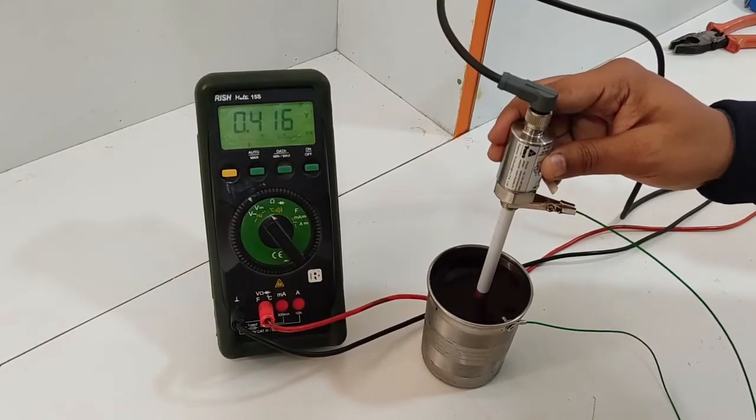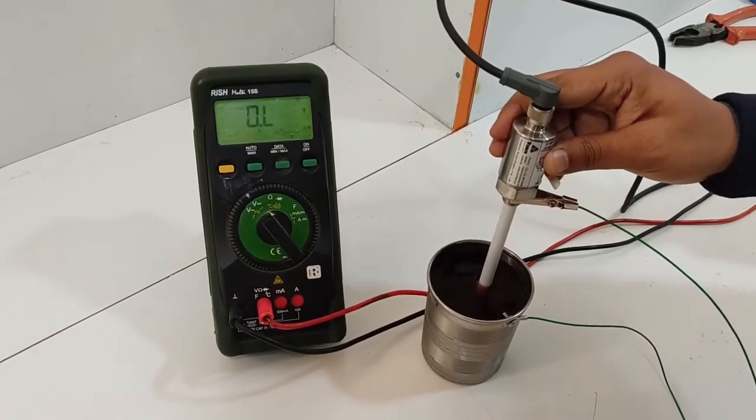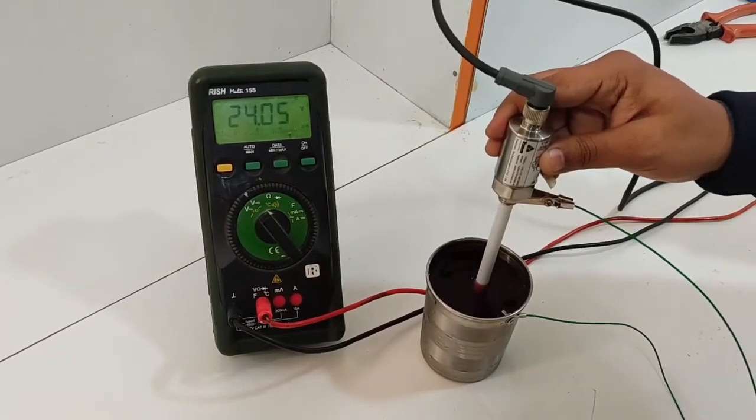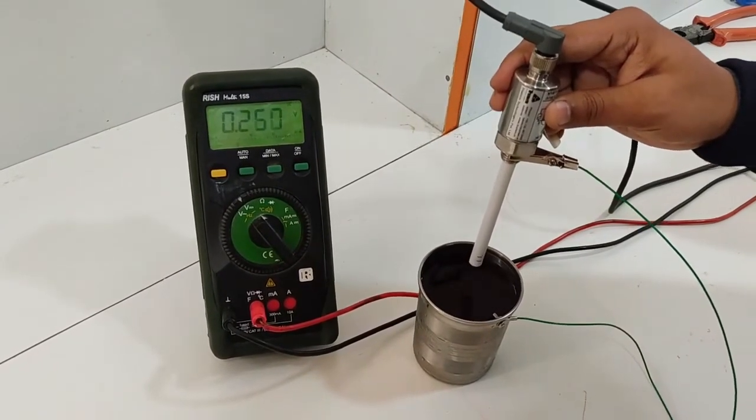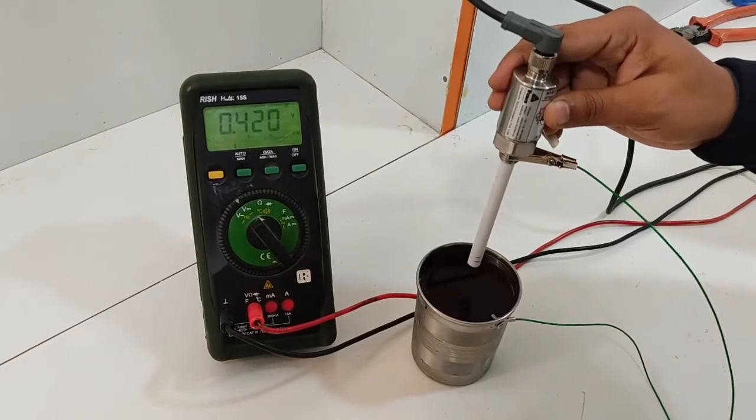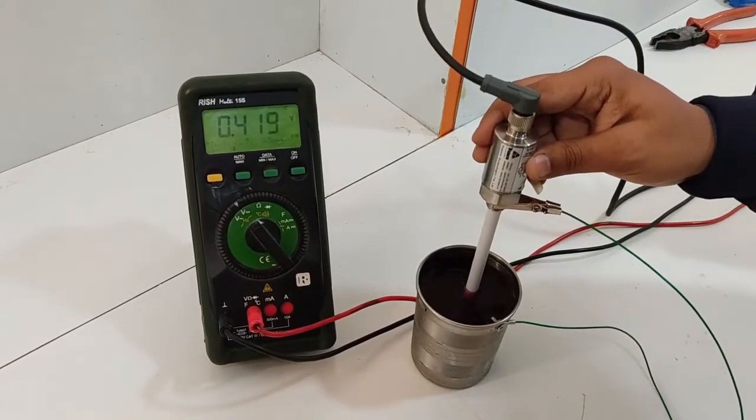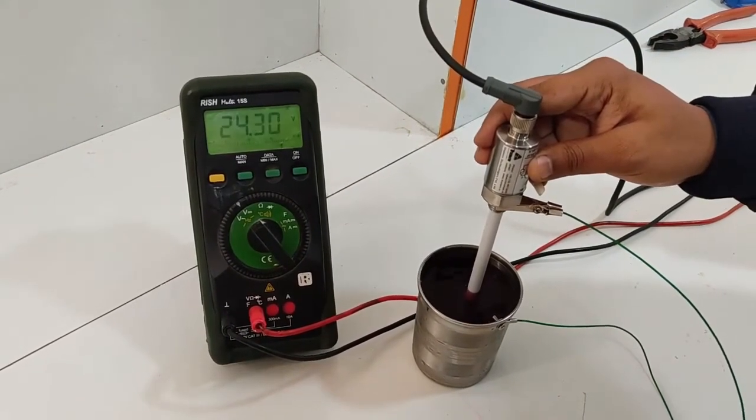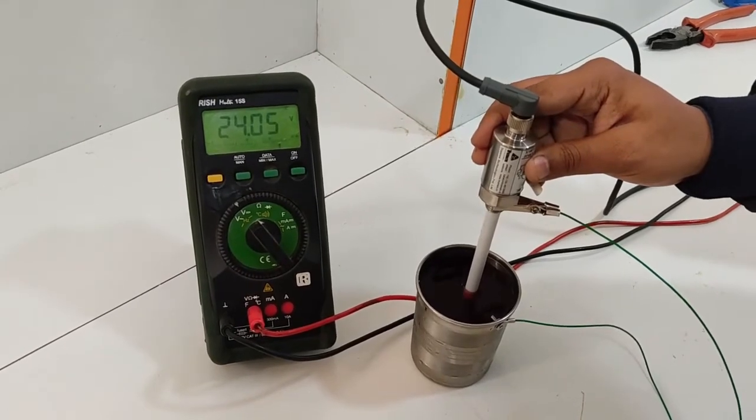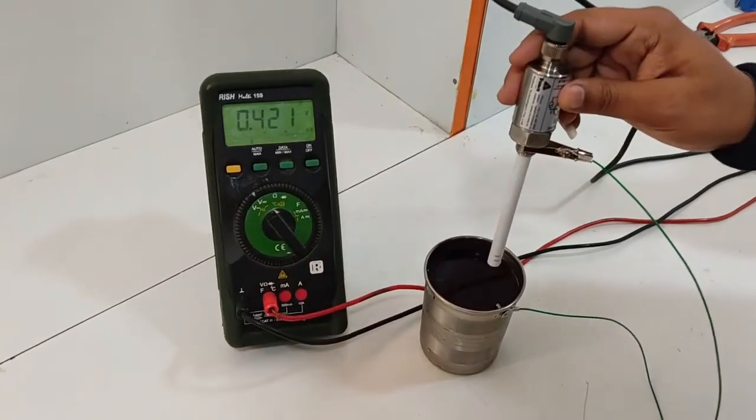As we dip it in the beer, you see that the output is changing from 0 to 24. Again we dip it into the liquid, you see that the output has changed from 0 to 24.